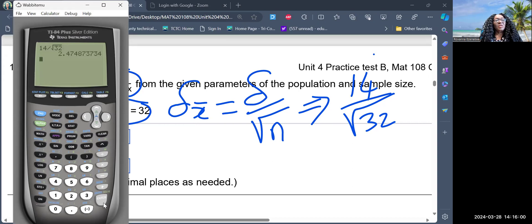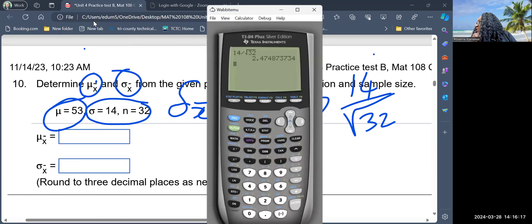And then when I hit enter, I have the standard error to how many decimal places. I'm told to leave my answer to three decimal places. I'm only worried about the standard error. So somebody give me the answer to three decimal places. What is the standard error to three decimal places?